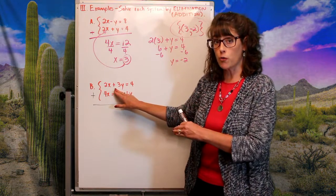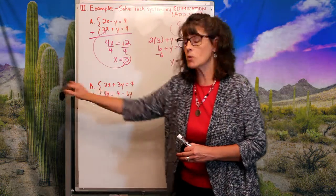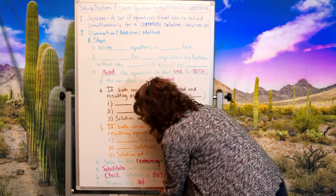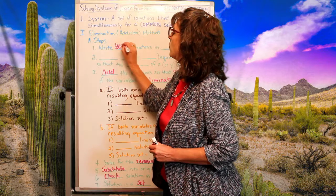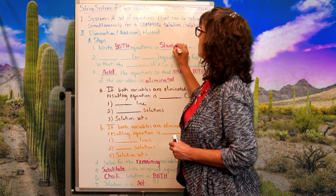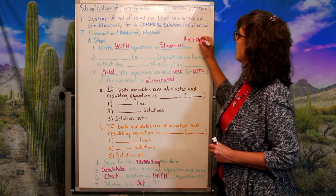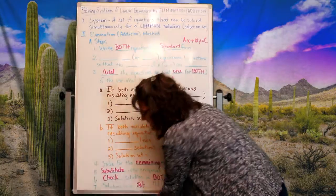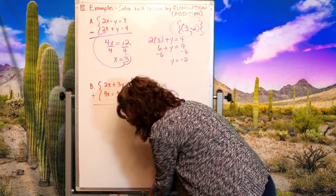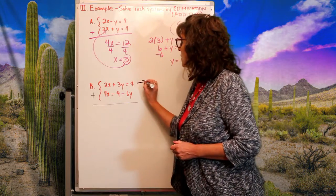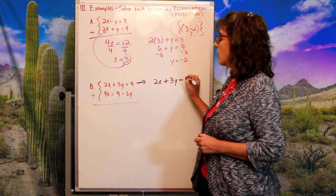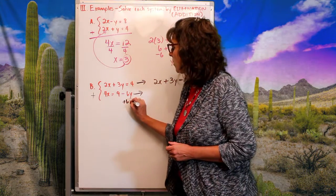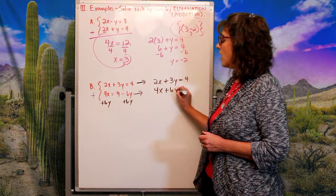The easiest fix is to put both equations in standard form. Standard form has x and y together on one side of the equal sign and the constant on the other: ax + by = c. Step one is to write both equations in standard form. The top equation is already there; for the bottom equation I add 6y to both sides, giving me 4x + 6y = 9. Now they're lined up and I'm ready to add.